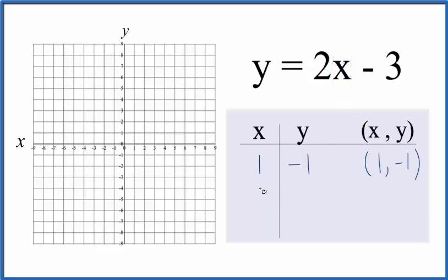0 is always a good value to put in. So if we put 0, 2 times 0, that's just 0, minus 3, y is minus 3. Then how about negative 1? We have negative 1, 2 times negative 1, that's negative 2, minus 3, we get negative 5.